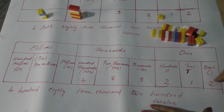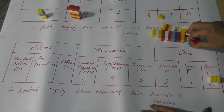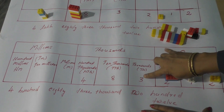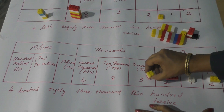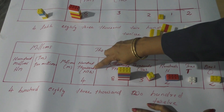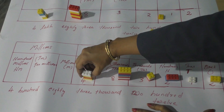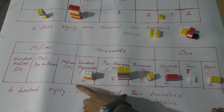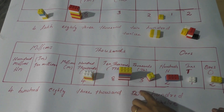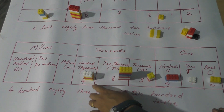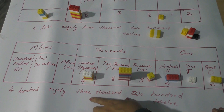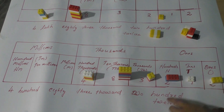Now let's do the same using the international place value system. At the ones place, we keep two blocks; tens, one block; hundreds, two blocks; thousands, three blocks; ten thousands, eight blocks; and at the hundred thousands place, four blocks. Reading from the highest place value, we get 400,000. Combining ten thousands and thousands: 83,000. Hundreds place gives 200. Combining tens and ones gives 12. So the number is read as 483,212.